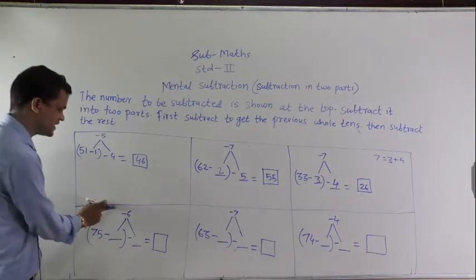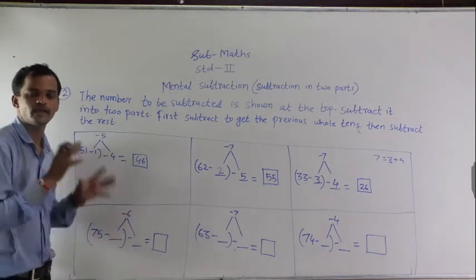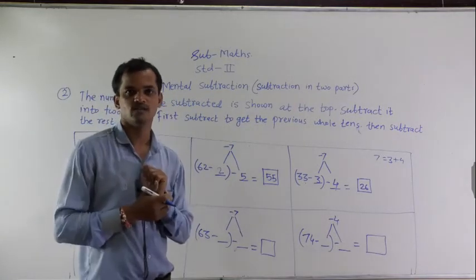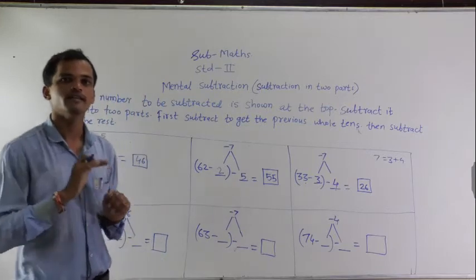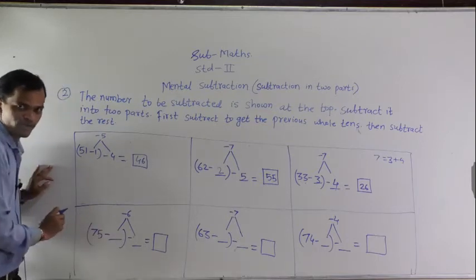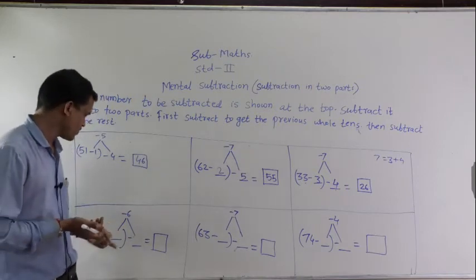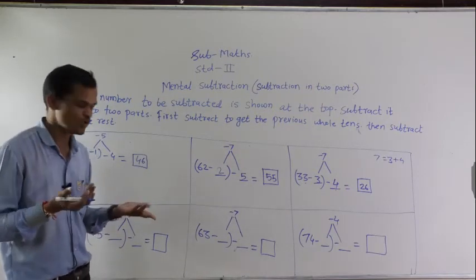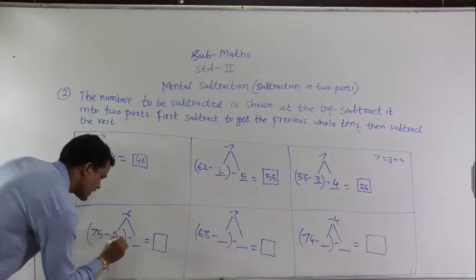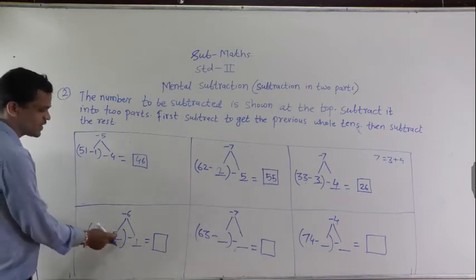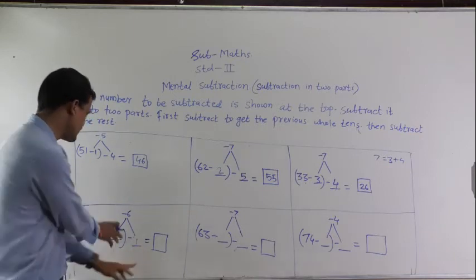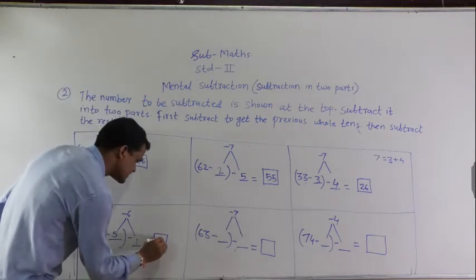Like this, you have to solve the examples. 75 minus 6 — the number given at the top you have to subtract from the given number, but divide 6 into 2 parts. When you subtract the first part, you will get the previous whole ten. The previous whole ten of 75 is 70. Which number to subtract from 75 to get 70? That is 5. So divide 6 into 5 plus 1. 75 minus 5 equals 70, then subtract 1. 70 minus 1 equals 69.